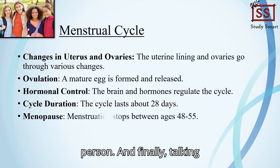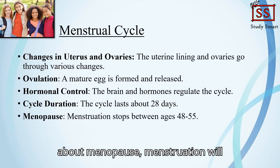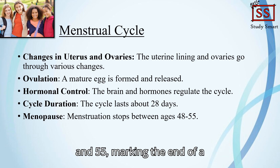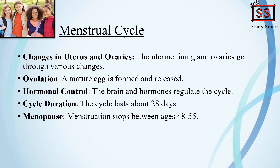Finally, talking about menopause — menstruation will eventually stop between the ages of 48 and 55, marking the end of a woman's reproductive years.